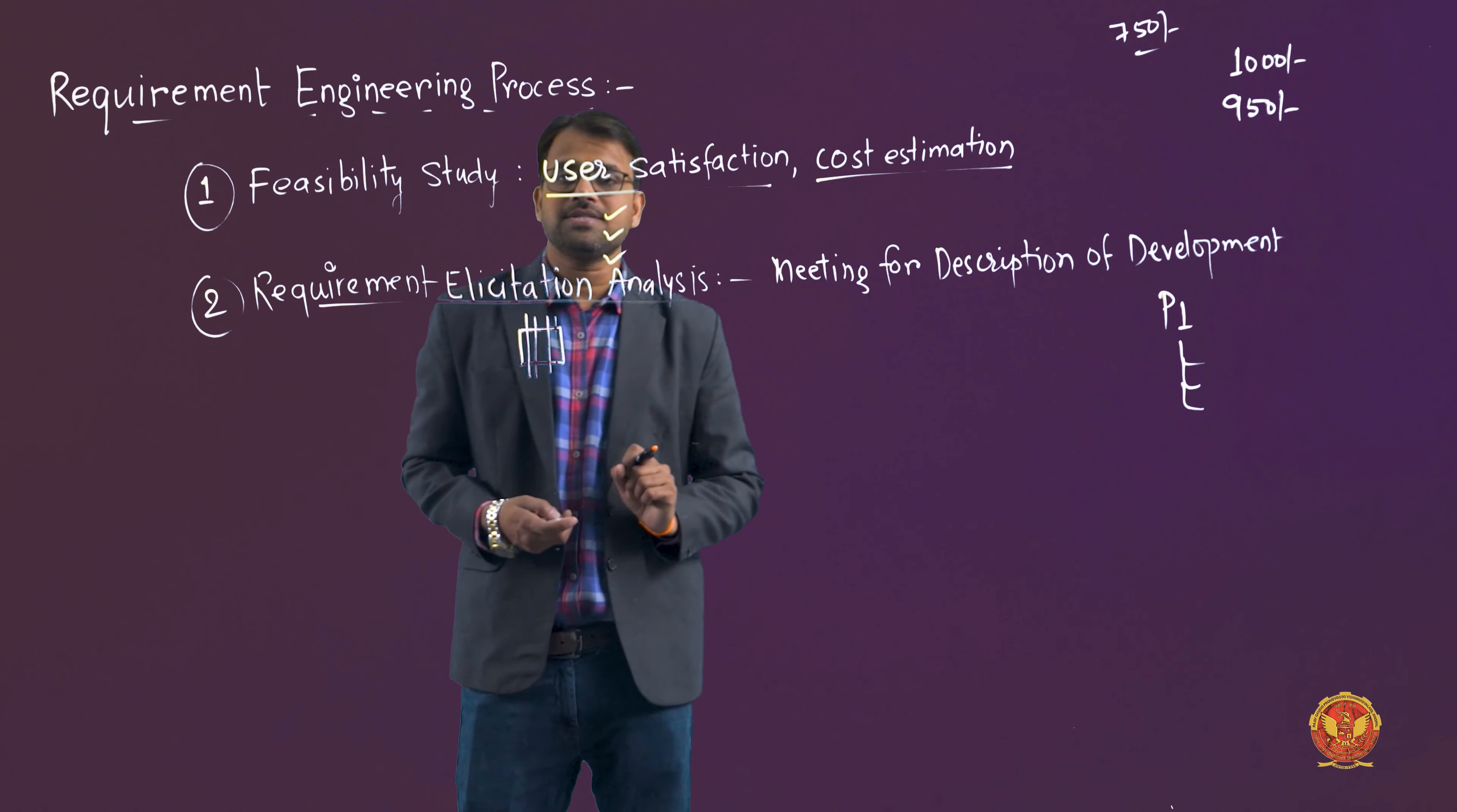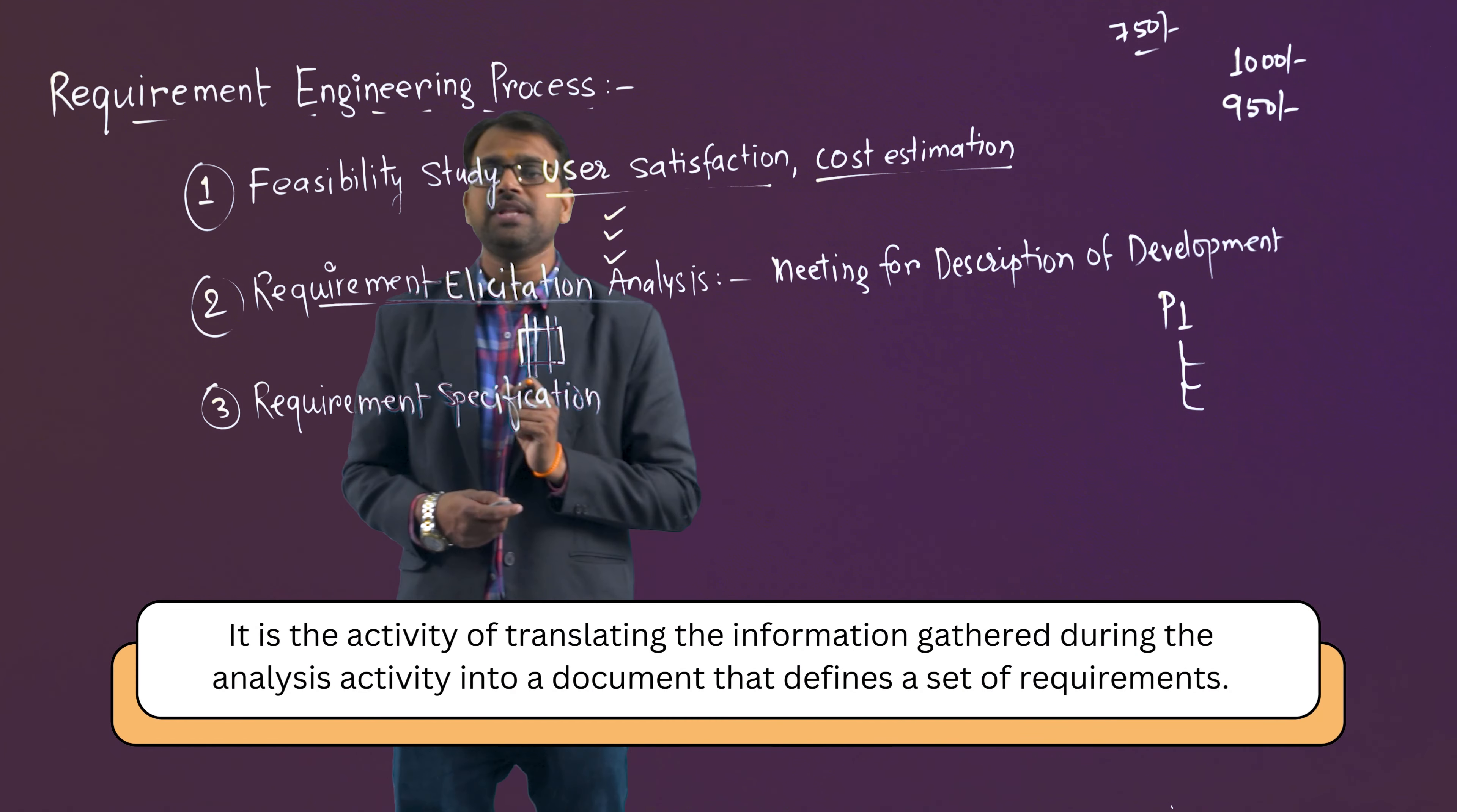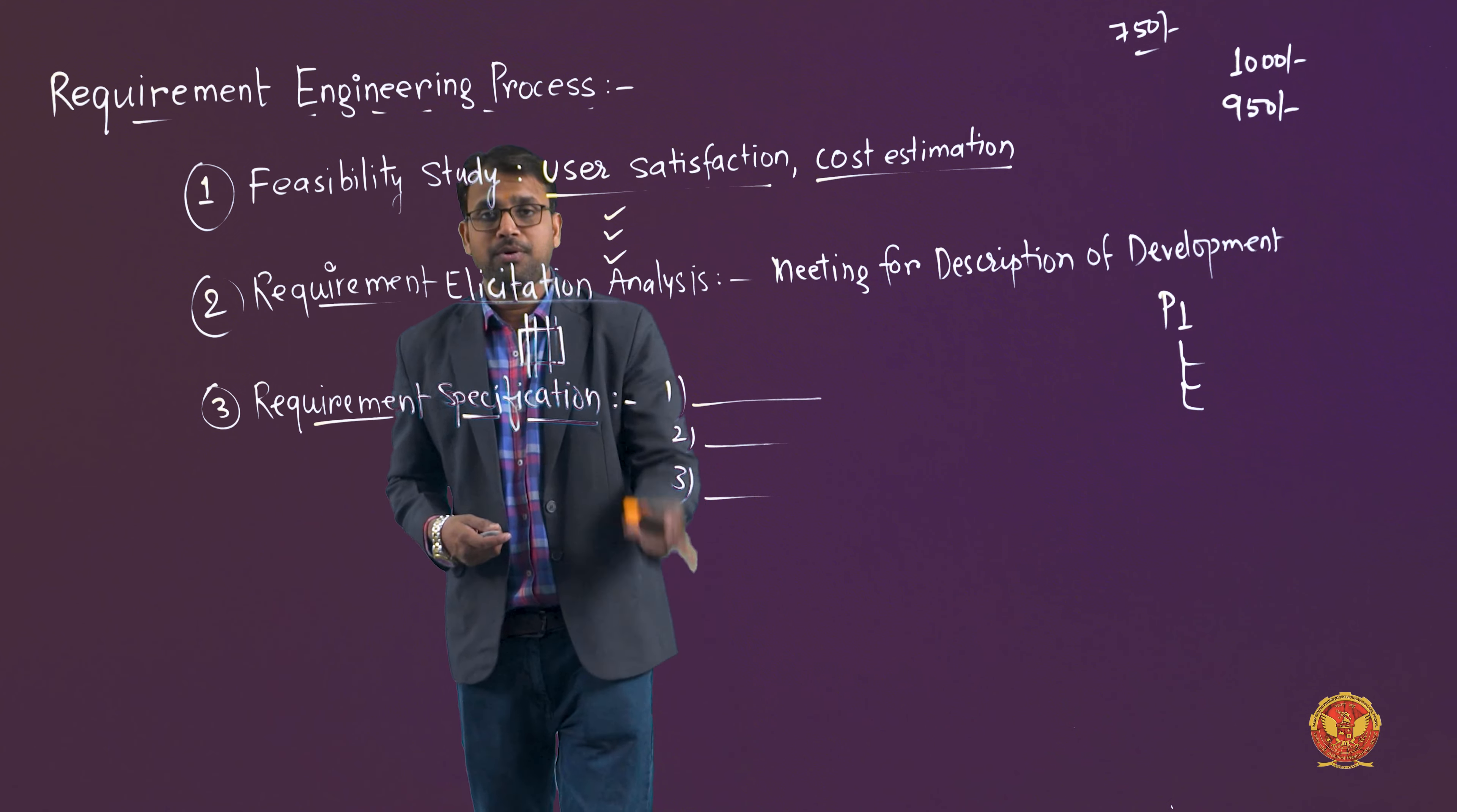Requirement elicitation analysis - the third one is requirement specification. After analysis, whatever final result comes, that is requirement specification. Actually this entire unit depends on design and SRS, meaning it depends on requirement engineering. So requirement specification - what does it include? It is the activity of translating the information gathered during the analysis activity into a document that defines a set of requirements. After analysis, whatever findings we got, whatever conclusions we drew, now we will specify those conclusions: point one, point two, point three. Likewise, after analyzing and discovering the requirements of that particular problem domain, we will draw finalized concluding statements. And this is a very important step.